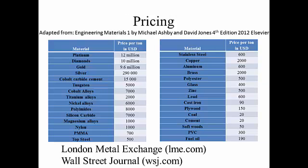Different materials have different prices. Platinum and diamonds are usually in the upper range of material prices, whereas cement and coal are in the lower range. These figures are adapted from a book and are not necessarily current — they're from around 2012. You can get up-to-date material prices from the Wall Street Journal and from the London Metal Exchange website, lme.com.